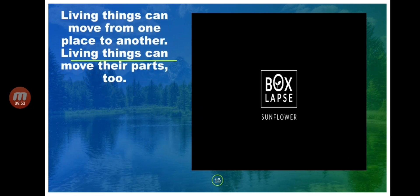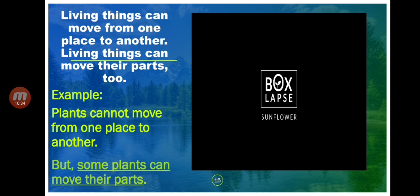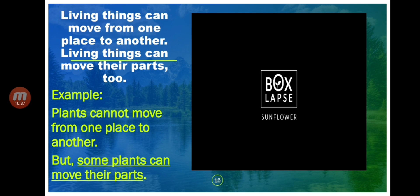Living things can move from one place to another — but not all living things can do this. Living things can also move their parts. For example, a plant is a living thing, but plants cannot walk or run. However, they can move their body parts. Plants cannot move from one place to another, but some plants can move their parts.